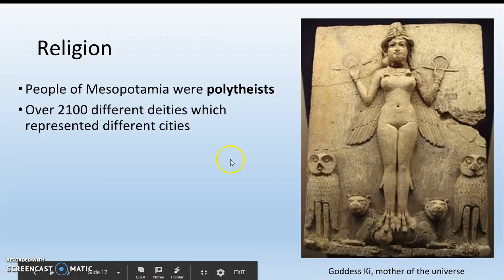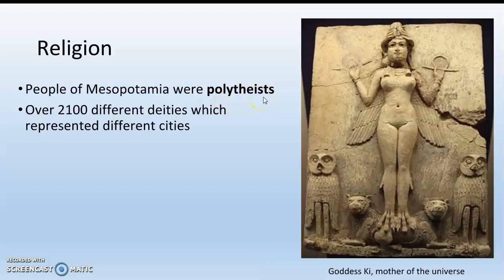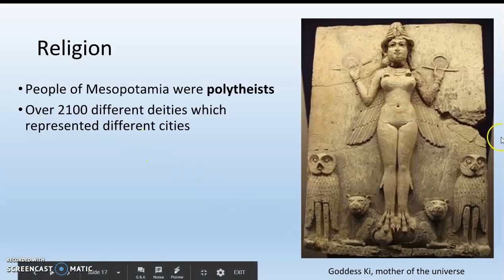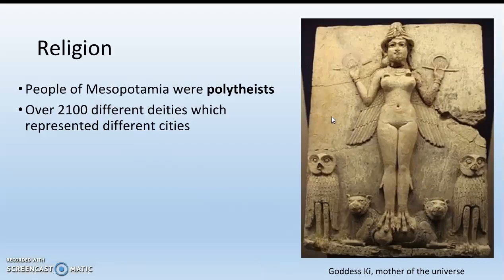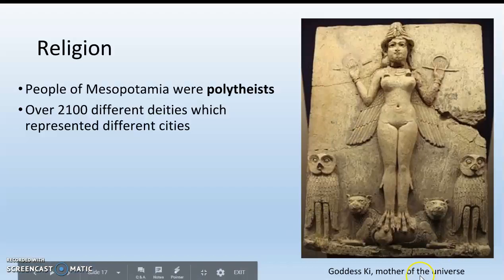The people of Mesopotamia were polytheists — poly means many, theist means god — meaning they believed in many gods and goddesses. In fact, they had over 2,100 different gods and goddesses, with each god or goddess representing one of the city-states. This is the goddess Ki, considered the most important goddess. She is the mother of the universe in Mesopotamian religion. She's depicted with two cool dogs, some owls, and bird feet.